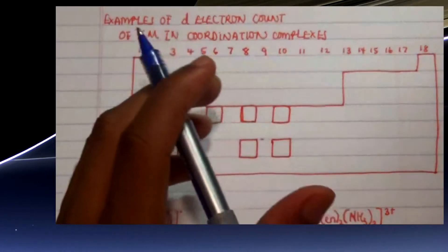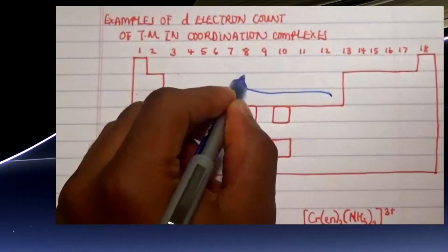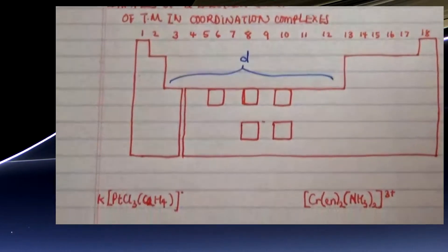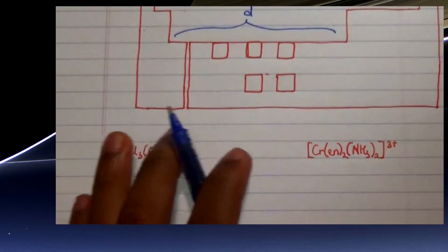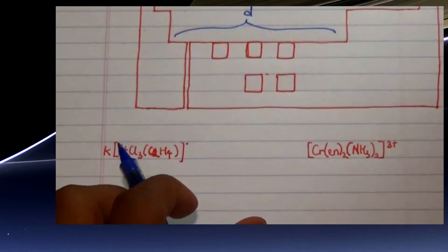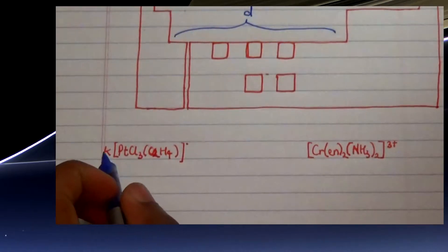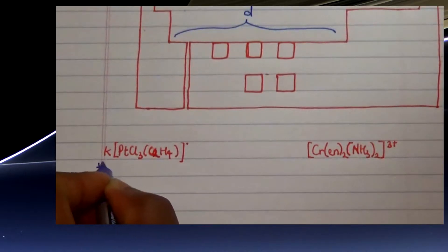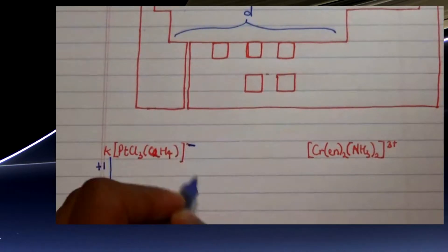We're going to look at a specific group — transition metals located in the D block region. The first example is a compound with potassium attached to an ionic complex containing platinum. Since potassium is a cation with a positive charge of +1, by default the other side has a charge of negative one.